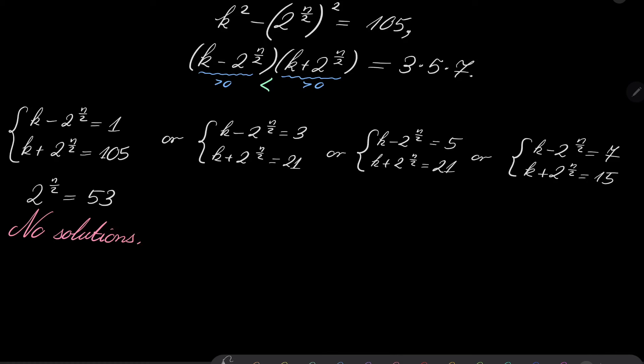In the second case, if we subtract, we will have 21 minus 3. 21 minus 3 is 18. Sorry, I made a mistake. Not 21, but 35. All right. Now, 35 minus 3 is 32. 32 over 2 is 16. So, in this case, we get n over 2 equals 4. So, n equals 8.